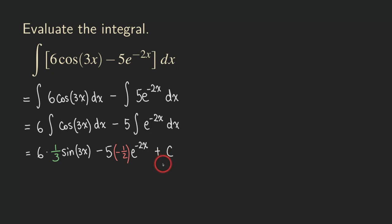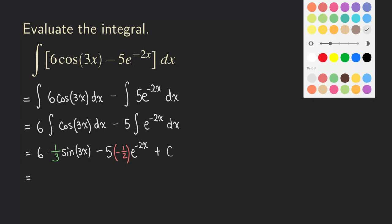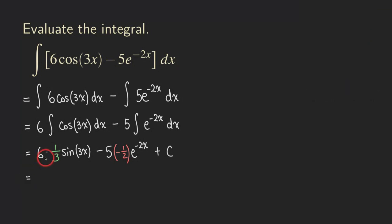Now let's clean up the expression. We have six times one over three — the three and six cancel to give two — so we get two sine of three X. For the second term, the minus signs and the five and two give us plus five over two, times E to the negative two X, plus the constant C. That's our final answer.